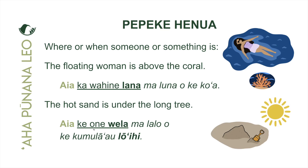We have vela in bold because it is a kahulu describing what type of sand in the piko position. Then we have malalo o — under — ke kumulā'au, the tree. What kind of tree? Ke kumulā'au lo'ihi. As we translate from English into Hawaiian, we can look at the English, identify its parts, and start to formulate the 'ōlelo Hawai'i.